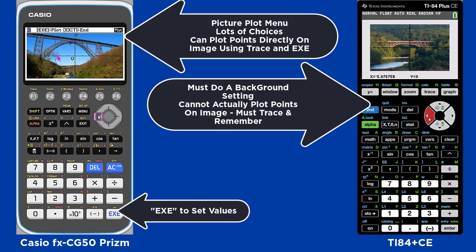As you can see, on the Casio, you use the toggle and the trace to go to a position on the picture and execute to set the point. Notice that the point stays right on the graph — you can see it as a pink X.